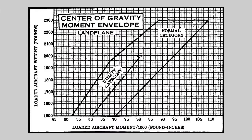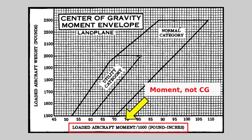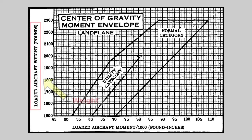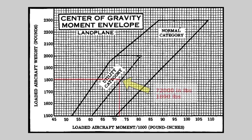It's pretty common for aircraft loading charts to be presented with loaded aircraft moment — or in this case, moment divided by 1,000 — on the x-axis and weight on the y-axis. To determine if our loading falls within limits, we look at the intersection between the aircraft's weight and the moment. In our case, we're just barely inside the moment envelope for utility category operations.